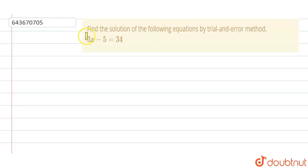Hello friends, today's our question is find the solution of the following equations by trial and error method. The question is 3x - 5 = 34. So let's start the solution.